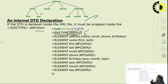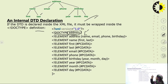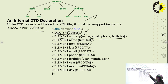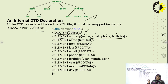After that, open the bracket and write each and every element visible in the tree structure. After declaring the root node 'address', write the further elements of that root node. In the next line, write ELEMENT then the root node name 'address', followed by its child elements: name, email, phone, and birthday — these four are the elements of root node address.